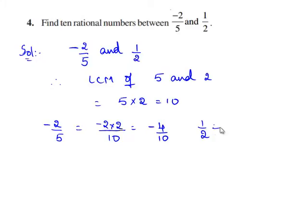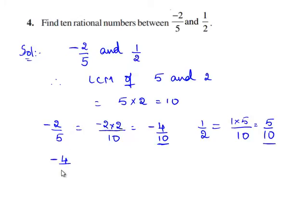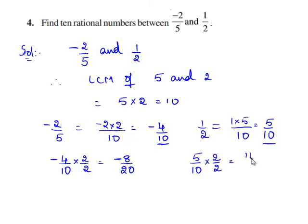And 1 by 2 can be written as with 10 as denominator, giving us 5 by 10. Now, let us find the equivalent fractions of minus 4 by 10 and 5 by 10. Let us multiply both numerator and denominator with 2. Therefore, we have minus 8 by 20. We shall also multiply 5 by 10 with 2 on both numerator and denominator. Therefore, we have 10 by 20.